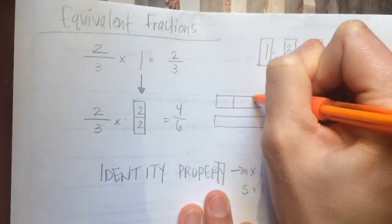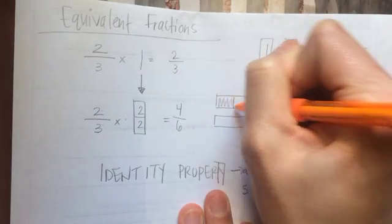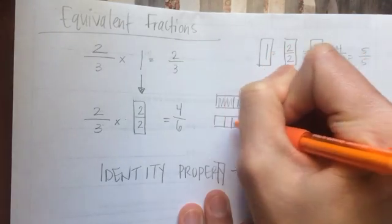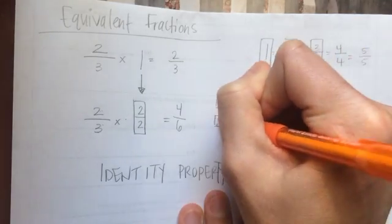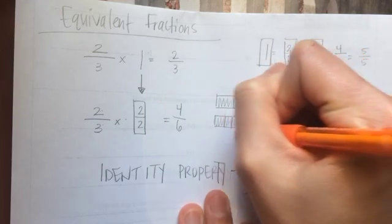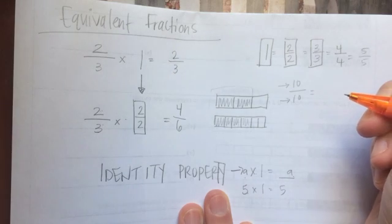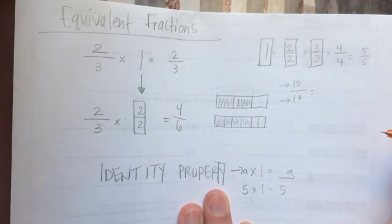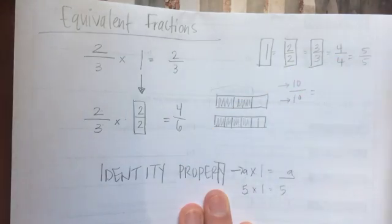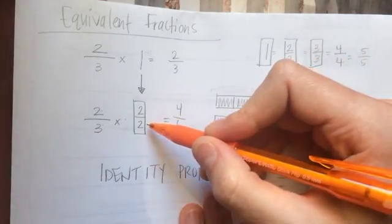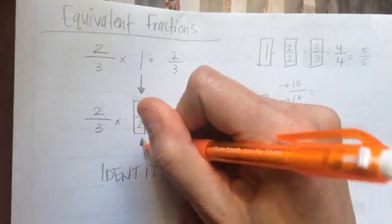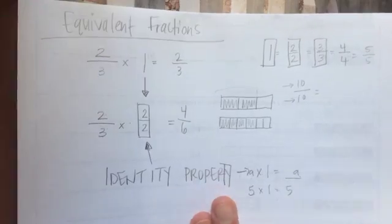And this works because if I were to draw this picture and I drew 2 thirds, and then I drew 4 sixths - 1, 2, 3, 4 - it would represent the same amount. It's the same value, it's just cut up into more pieces. One of the things that we're trying to get the students to understand is why this strategy works. And it works because it is the identity property. It's like multiplying by 1.